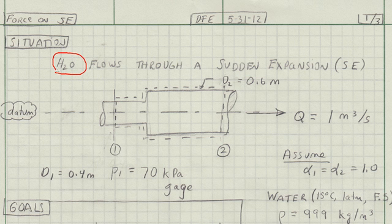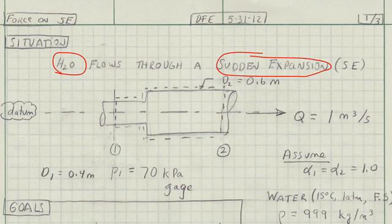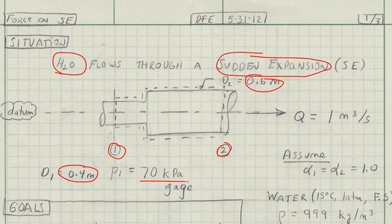We have water flowing through a sudden expansion. The inlet diameter is 0.4 meters. The outlet diameter is 0.6 meters. The inlet pressure, P1, is 70 kPa,